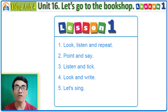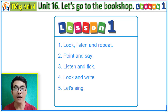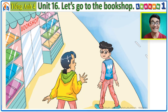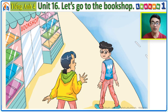Hi there, welcome back to Coffee Man English TV. I'm here with you in English 4, Unit 16. Let's go to the bookshelf. Now let's get started with Activity 1: look, listen and repeat. You look at the picture here — who's she, and who is he? Yes, very good. She is Mine and he is For. Where are they going? Yes, they are going to the bookshop.